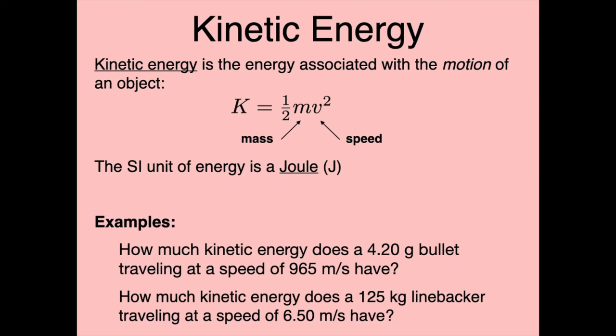For now, let's focus on kinetic energy — the energy associated with the motion of an object. Kinetic energy is calculated as K = ½mv², where m is the mass and v is the speed. The SI unit of kinetic energy is the joule, which breaks down into kilogram·meters²/second², consistent with the base SI units.